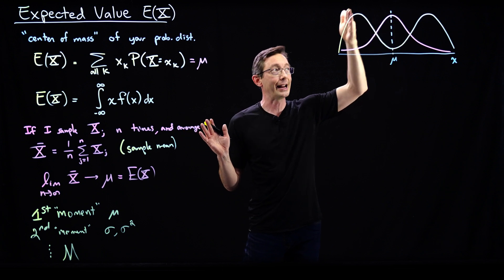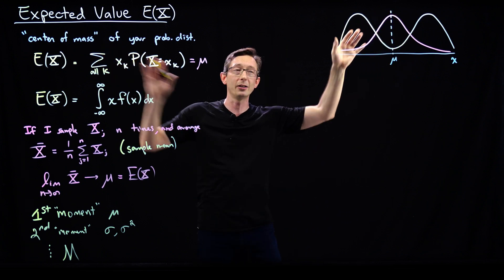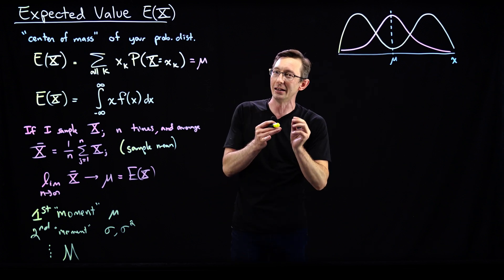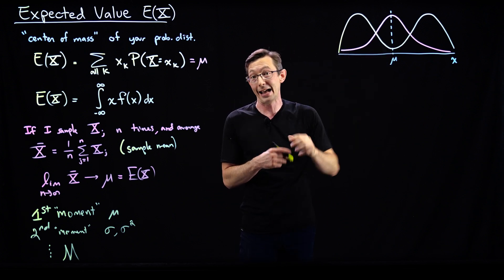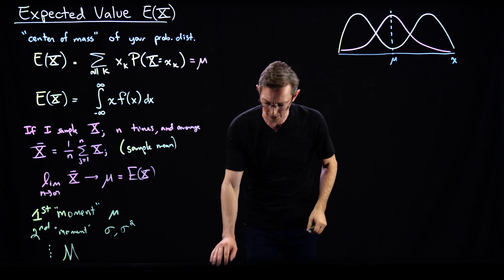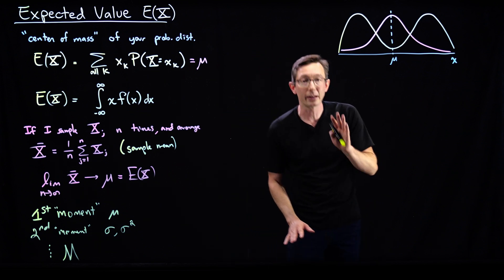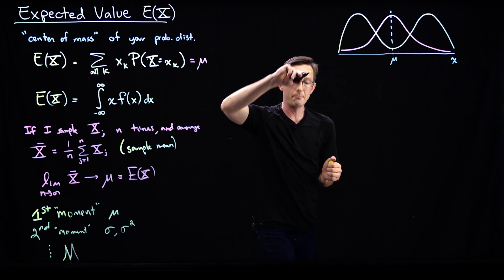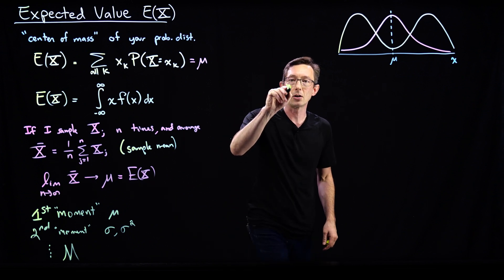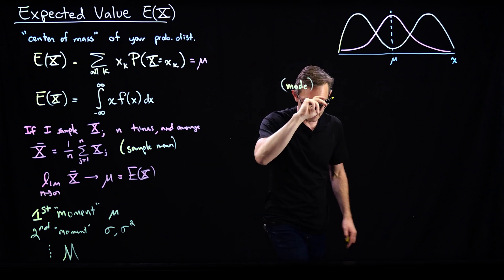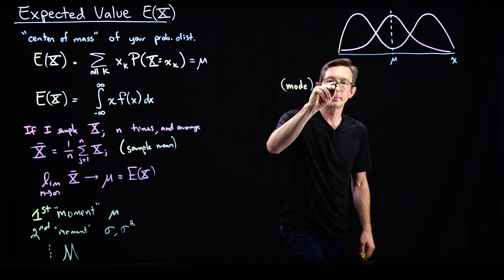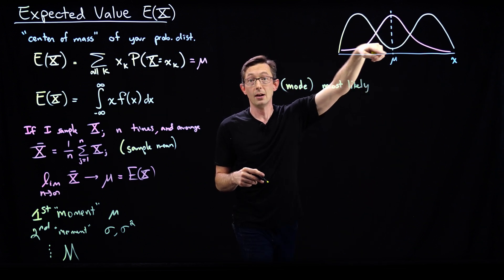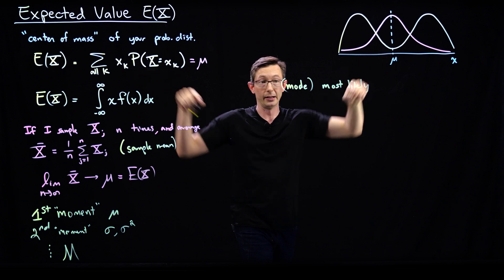Really what I was trying to tell you is that I can have distributions with the same expected value that are completely different. The expected value doesn't actually mean it's even likely that I find my distribution at that point. So it's not necessarily the most likely value of x. I'm going to define a couple of things here. The most likely value of x is called the mode — literally the value of x that has the highest probability.